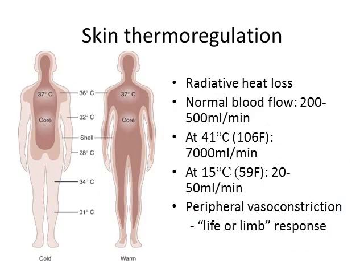Knowing the basics of skin thermoregulation is important to understand how frostbite develops. Your body loses heat by radiative heat loss, which increases when blood flow to the skin and extremities increases via vasodilation. This is what happens when you are hot.